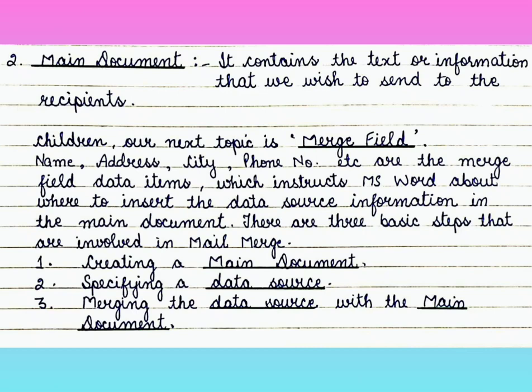Our next topic is Merge Field. Name, address, city, phone number, etc. are the Merge Field data items, which instruct MS Word about where to insert the data source information in the main document. There are three basic steps that are involved in Mail Merge.